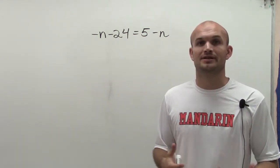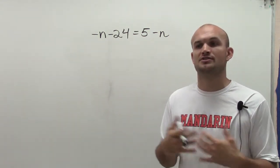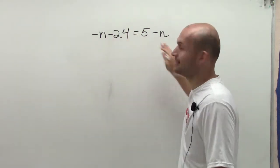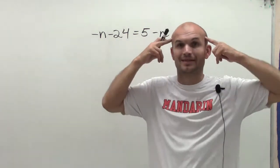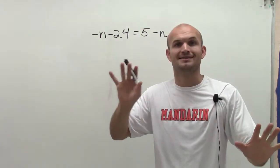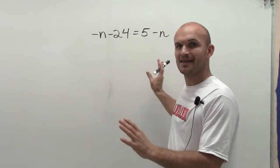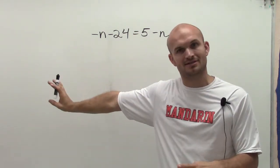Well, what I've talked about usually is getting rid of the smaller value of your variable. Here I have a negative n and a negative n. Since they're exactly the same, that should light up a light bulb in my head. Since they're exactly the same, if I eliminate one side, I'm going to eliminate that variable on the other side.